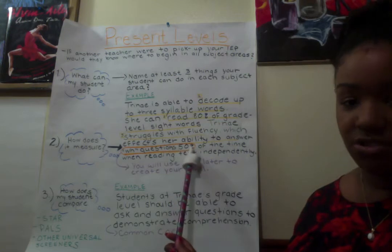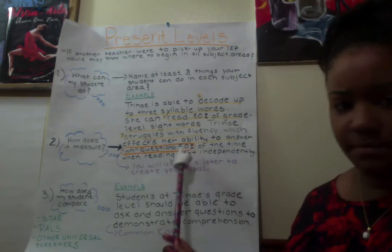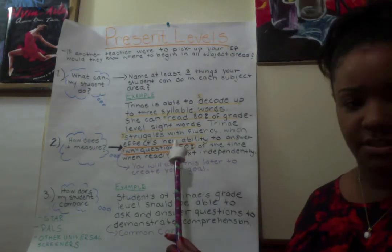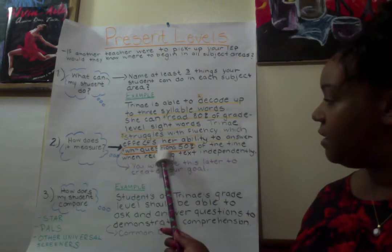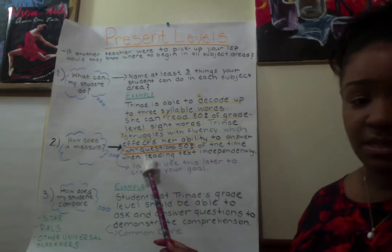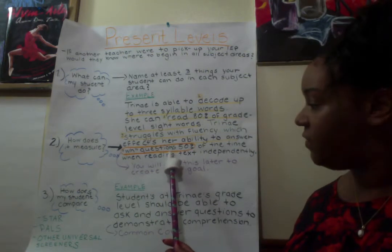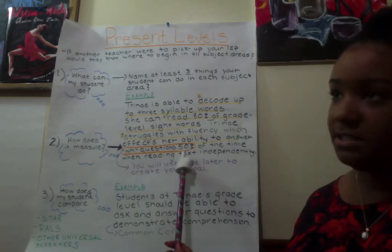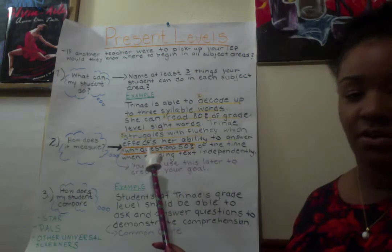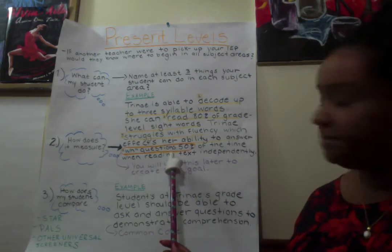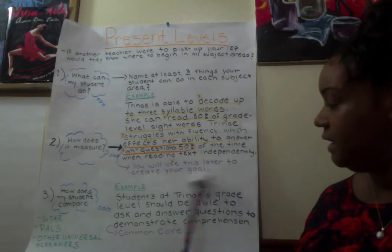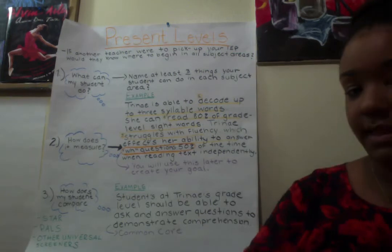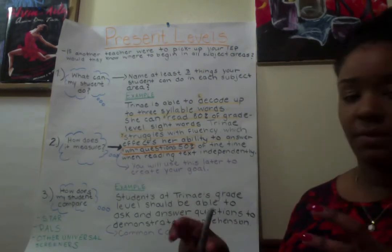I can't simply say she struggles with fluency because struggle can mean a lot of things. If I handed the IEP to another teacher, I want to be specific. It affects her ability to answer WH questions 50% of the time — so if I give her a test with 100 questions, she's only getting 50 right. With a comprehension test of 10 questions, she's consistently getting about five right when reading text independently. You will later use this to create your goal.